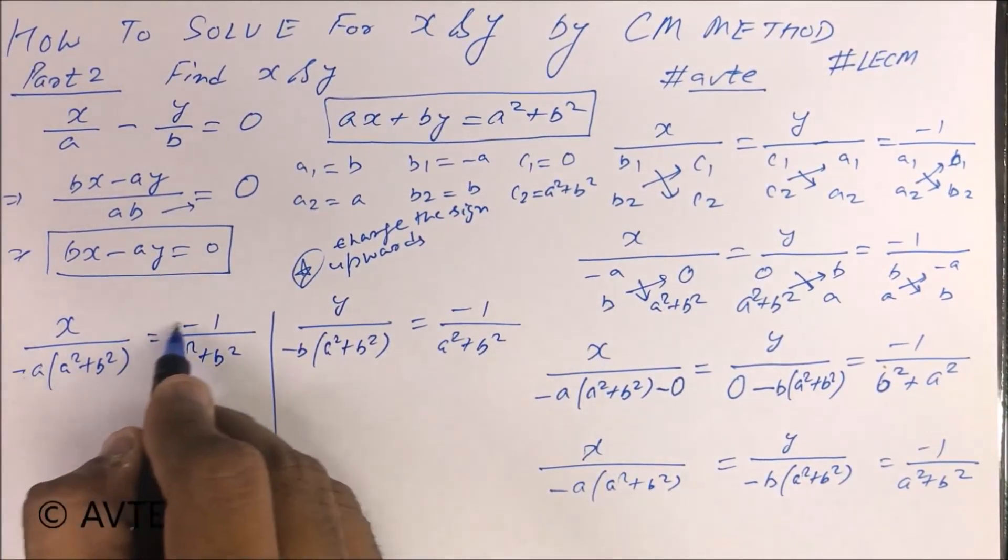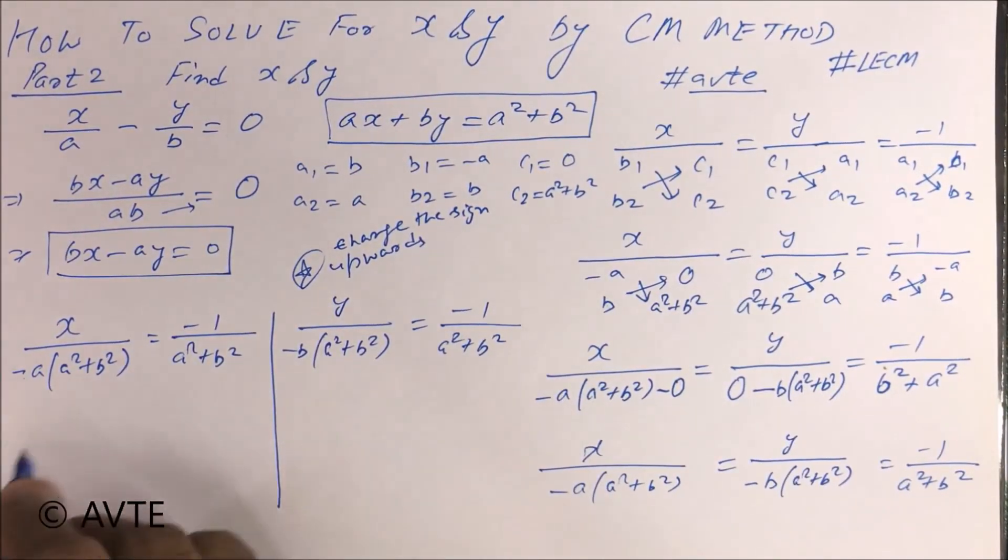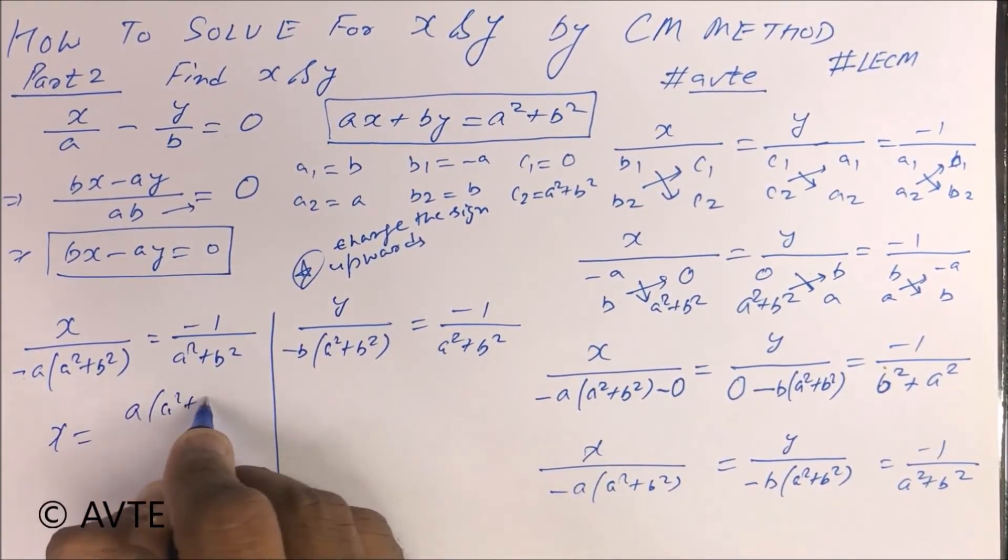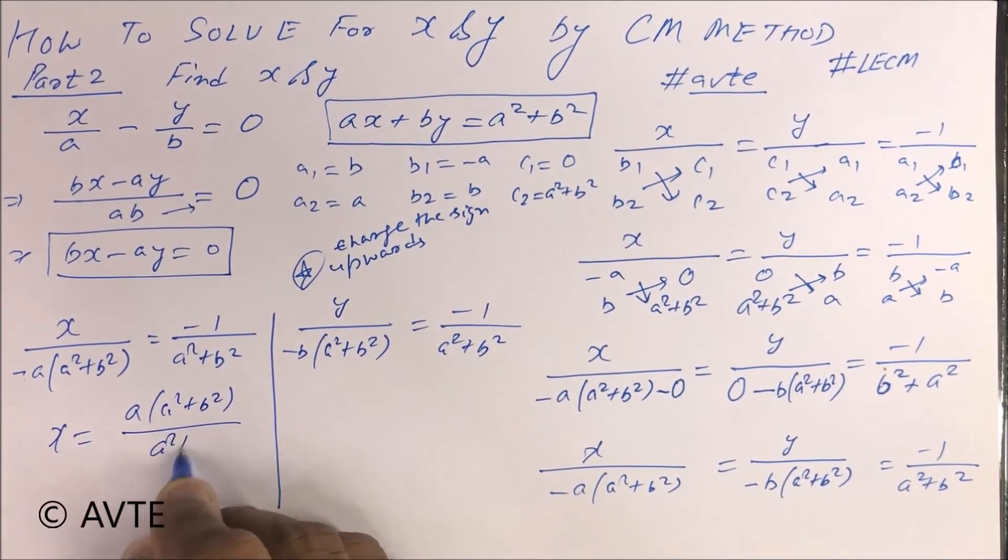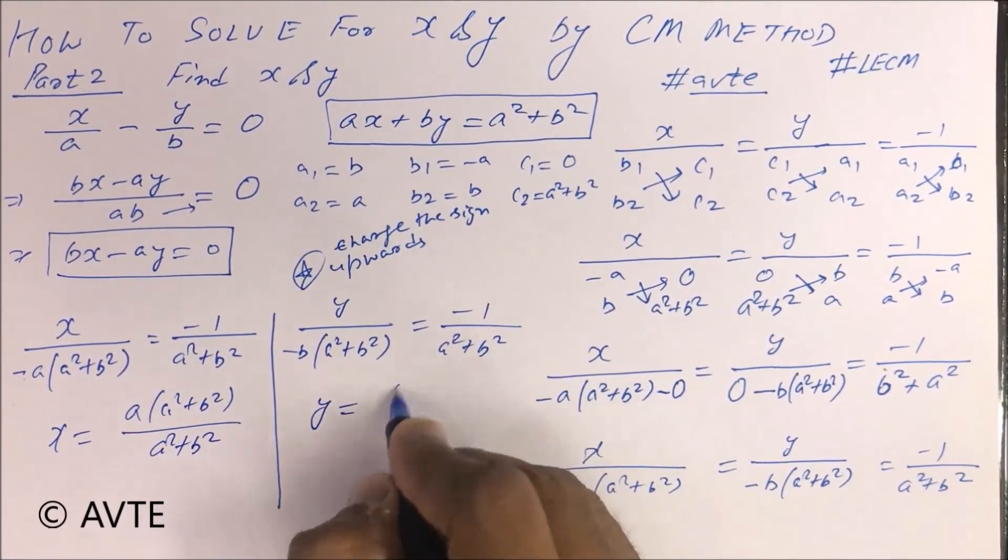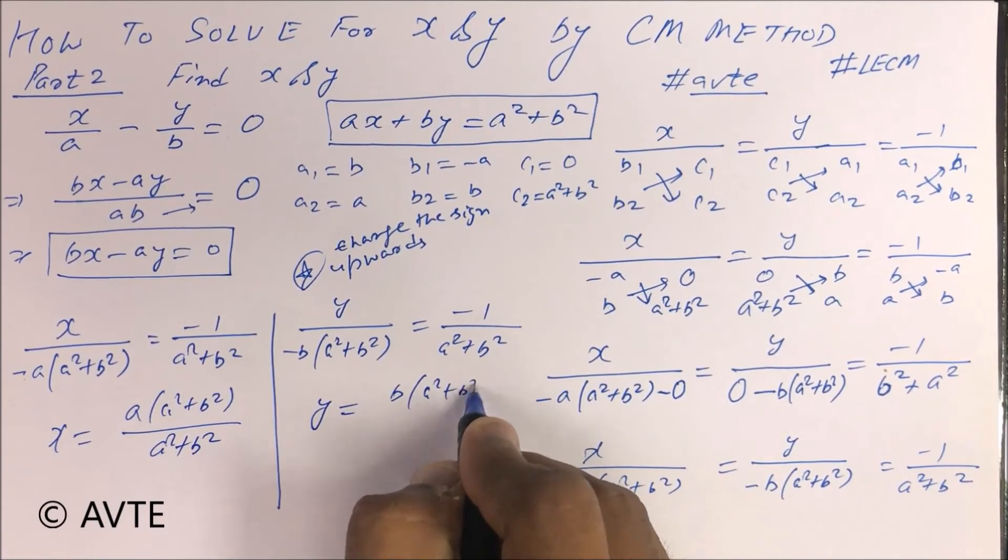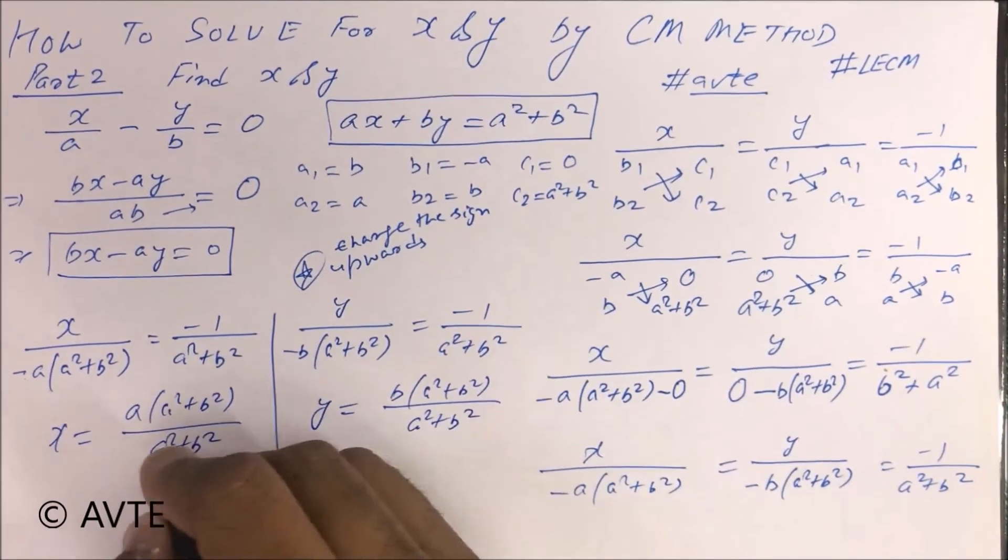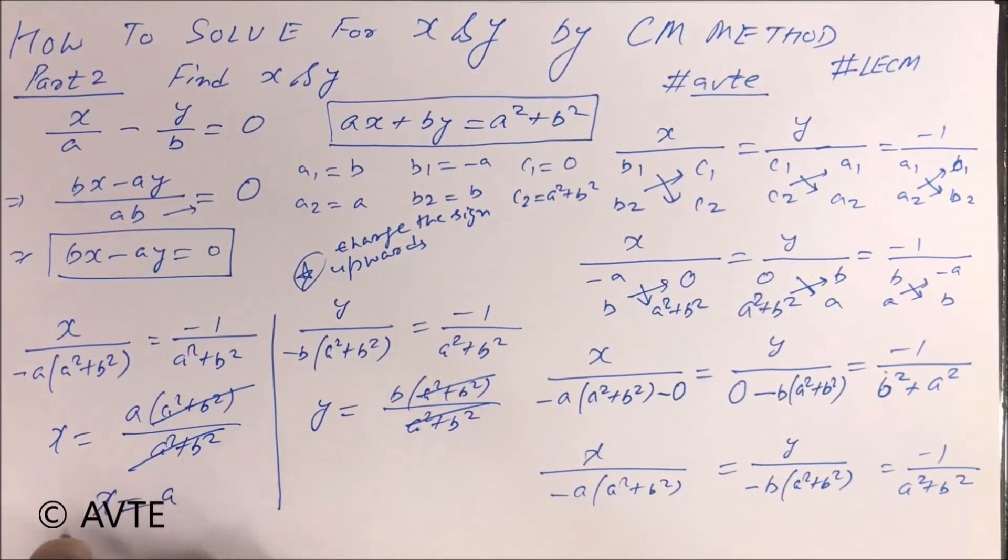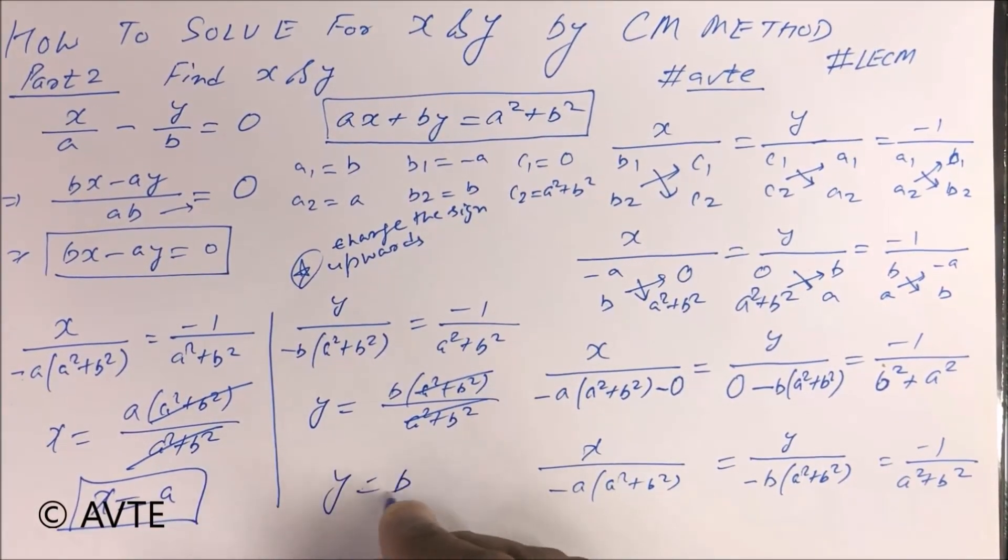If you multiply them, this is not upward, this is cross multiplication. So X is equal to minus into minus is plus, you can cancel. And same, minus into minus is plus. You can cancel the whole. The value of X is A and the value of Y is B.